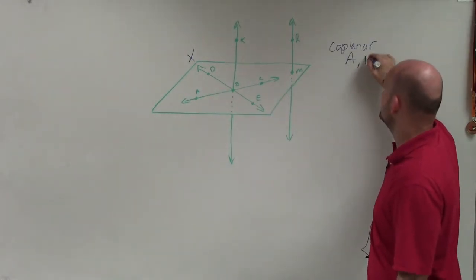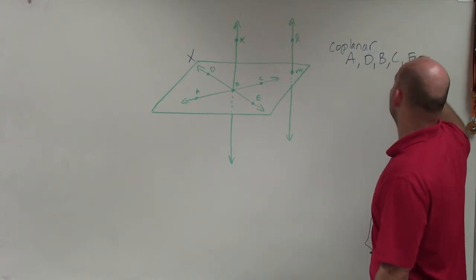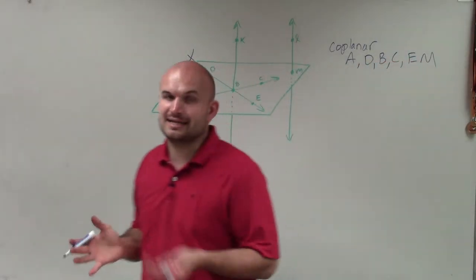So we have A, D, B, C, E, and M. Those are all points that lie on the plane.